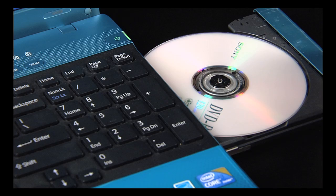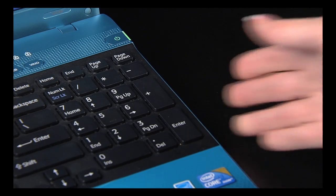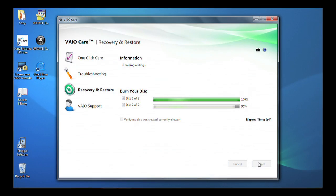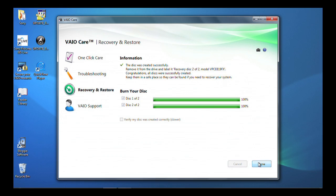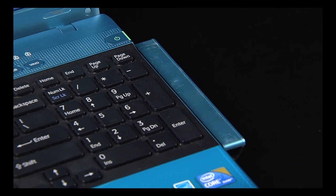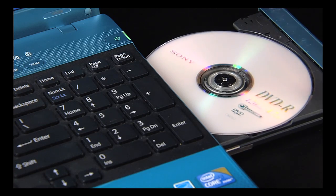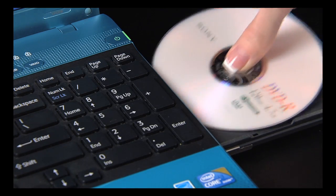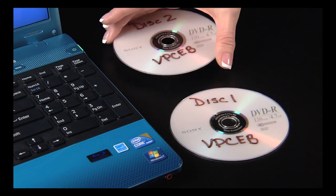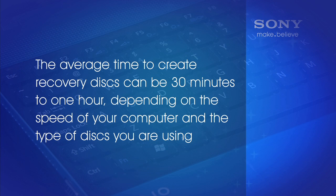Insert another disk. Once the second disk has been created, it will automatically eject. Remove it from the computer and label it. The average time to create recovery disks can be 30 minutes to 1 hour, depending on the speed of your computer and the type of disk you are using.